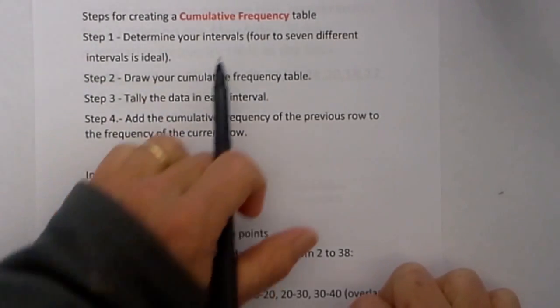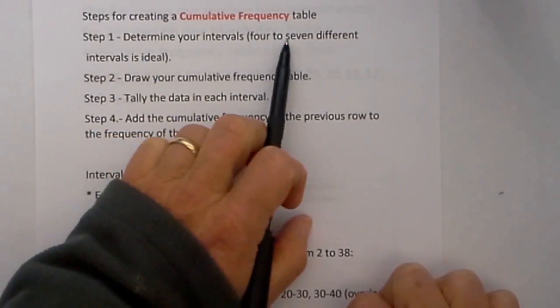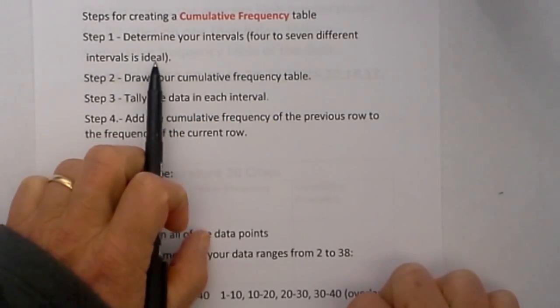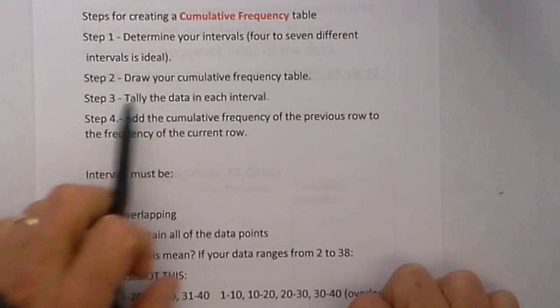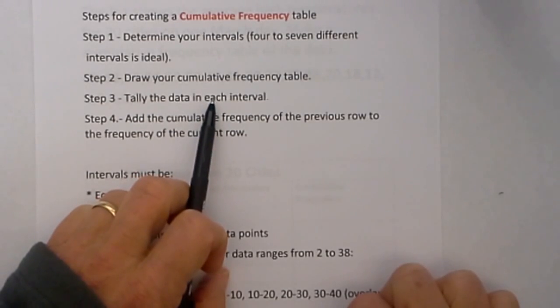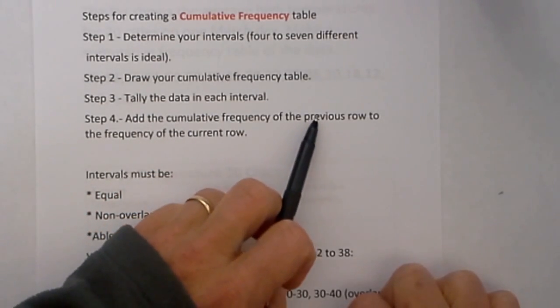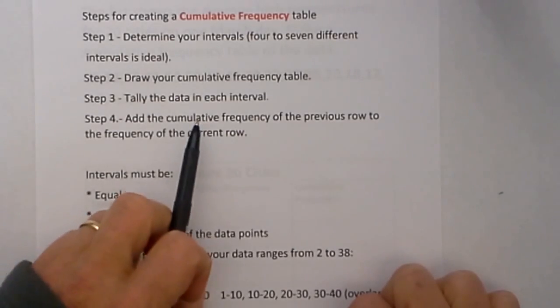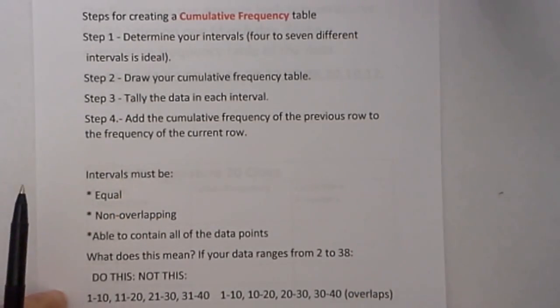For a cumulative frequency table: Step 1, determine your intervals. Four to seven different intervals is ideal. Step 2, draw your cumulative frequency table. Step 3, tally the data in each interval. And finally, Step 4, add the cumulative frequency of the previous row to the frequency of the current row. I will explain what that looks like in just a second.